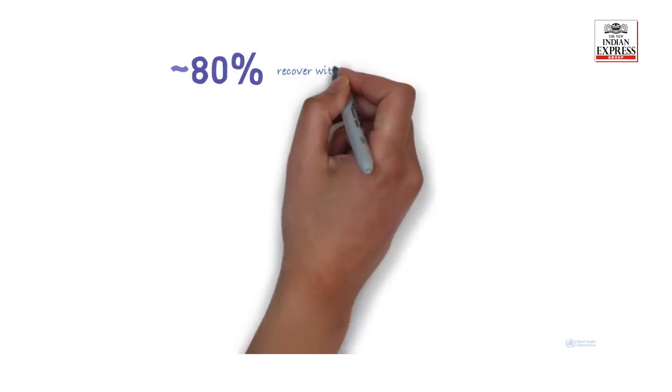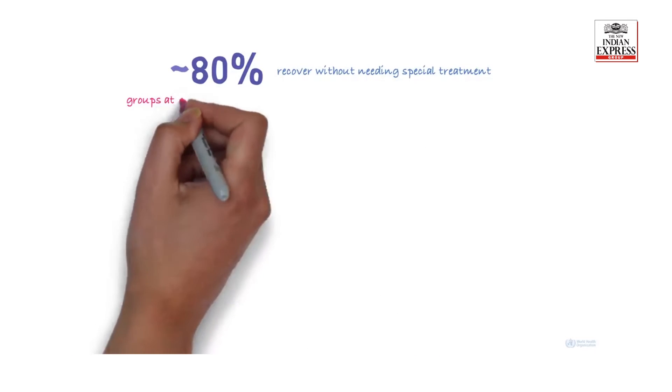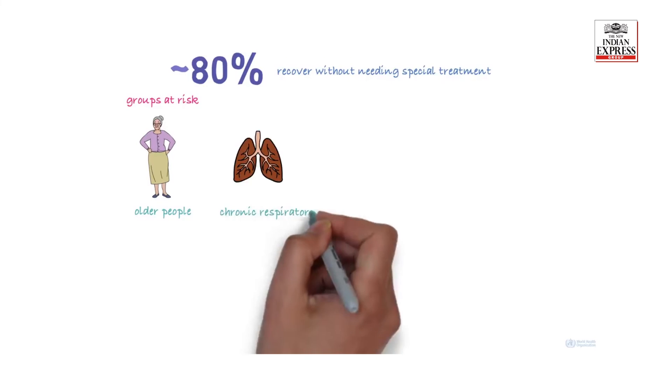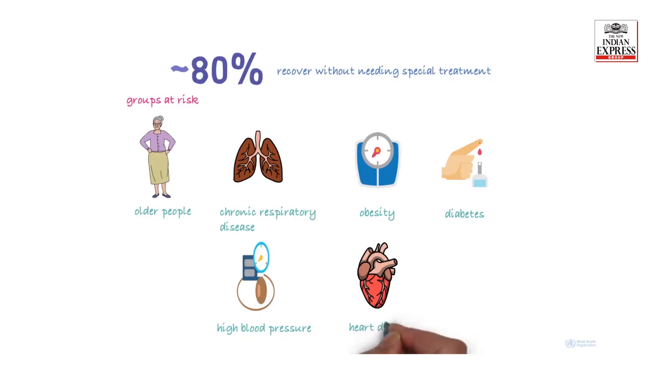About 80% of cases recover from the disease without needing special treatment. But there are some people who are at risk of serious illness. They include older people or people with underlying medical problems, such as chronic respiratory disease, obesity, diabetes, high blood pressure, heart disease, or cancer.